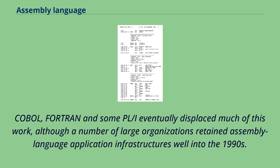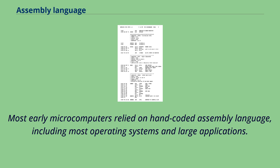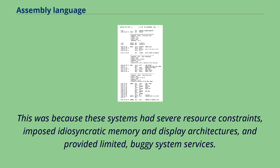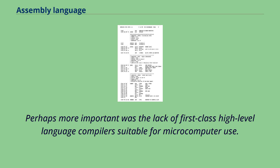COBOL, FORTRAN, and some PL/I eventually displaced much of this work, although a number of large organizations retained assembly language application infrastructure as well into the 1990s. Most early microcomputers relied on hand-coded assembly language, including most operating systems and large applications. This was because these systems had severe resource constraints, imposed idiosyncratic memory and display architectures, and provided limited, buggy system services. Perhaps more important was the lack of first-class high-level language compilers suitable for microcomputer use. A psychological factor may have also played a role — the first generation of microcomputer programmers retained a hobbyist, wires-and-pliers attitude.